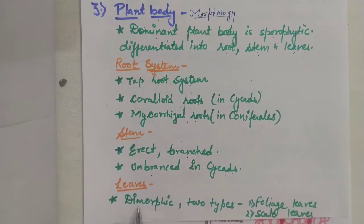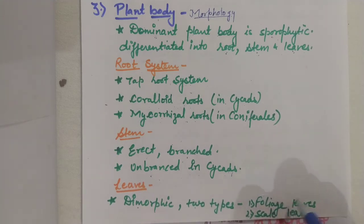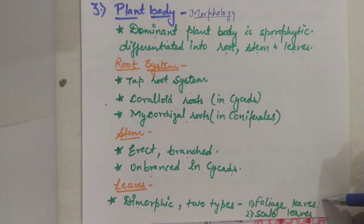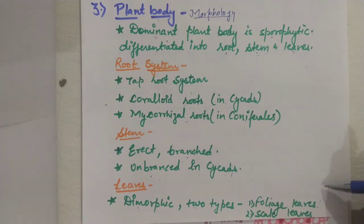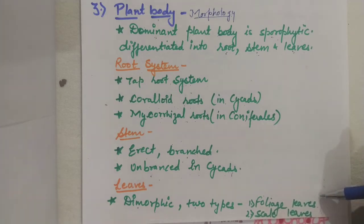Leaves are dimorphic — of two types: foliage leaves and scale leaves. Foliage leaves are green leaves that perform the function of photosynthesis; they can be simple or compound, varying across different genera and groups. Scale leaves are small, brown-colored leaves that perform the function of protection.